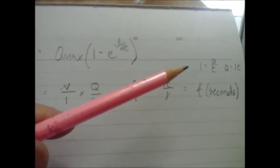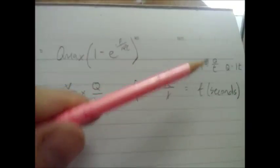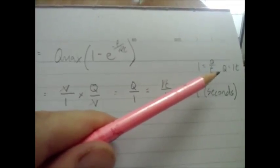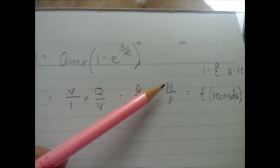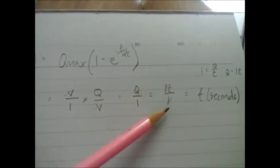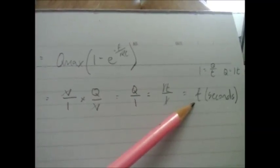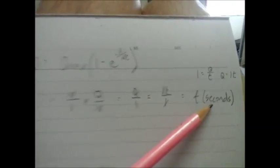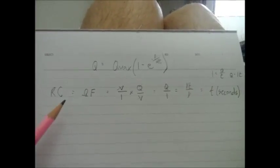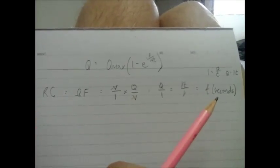So that ends up being charge over current. Now, if you look up here, we can see that current equals charge over time. Therefore, charge must equal current times time. So if I replace charge with current times time, I get IT over I. The I's cancel and it leaves me with T time, which is in seconds. So incredibly, resistance times capacitance has units of seconds.